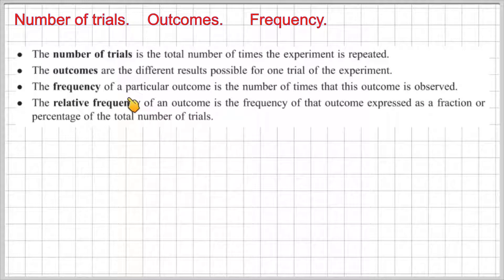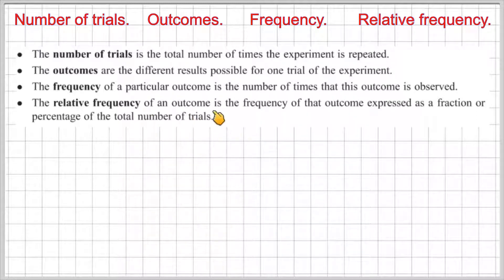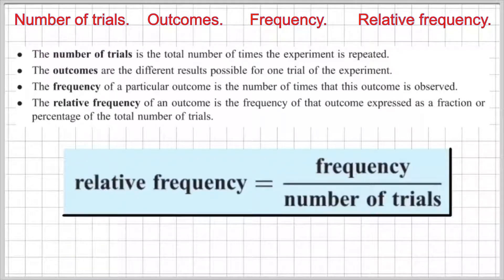The frequency of a particular outcome is the number of times that this outcome is observed. The relative frequency of an outcome is the frequency of that outcome expressed as a fraction or percentage of the total number of trials. In this lesson, we're going to be talking about relative frequency, which is the frequency over the total number of trials.